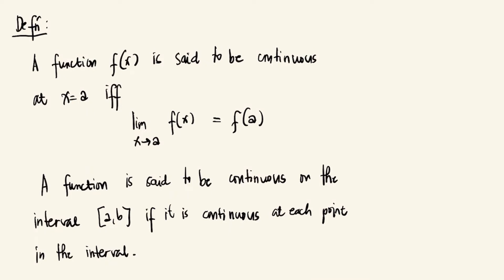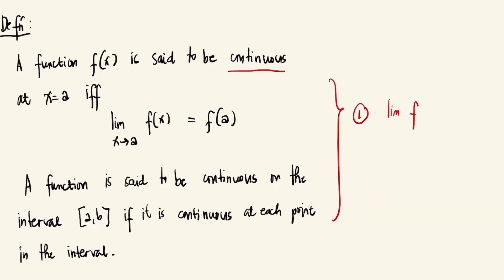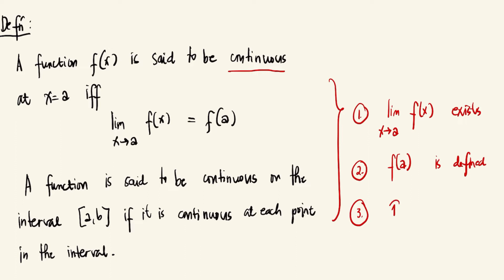We will start with the definition of what it means when a function is continuous at a point. A function f(x) is said to be continuous at x equals a if and only if: number one, the limit of f(x) as x approaches a exists; number two, f(a) is defined; and number three, number one is equal to number two.